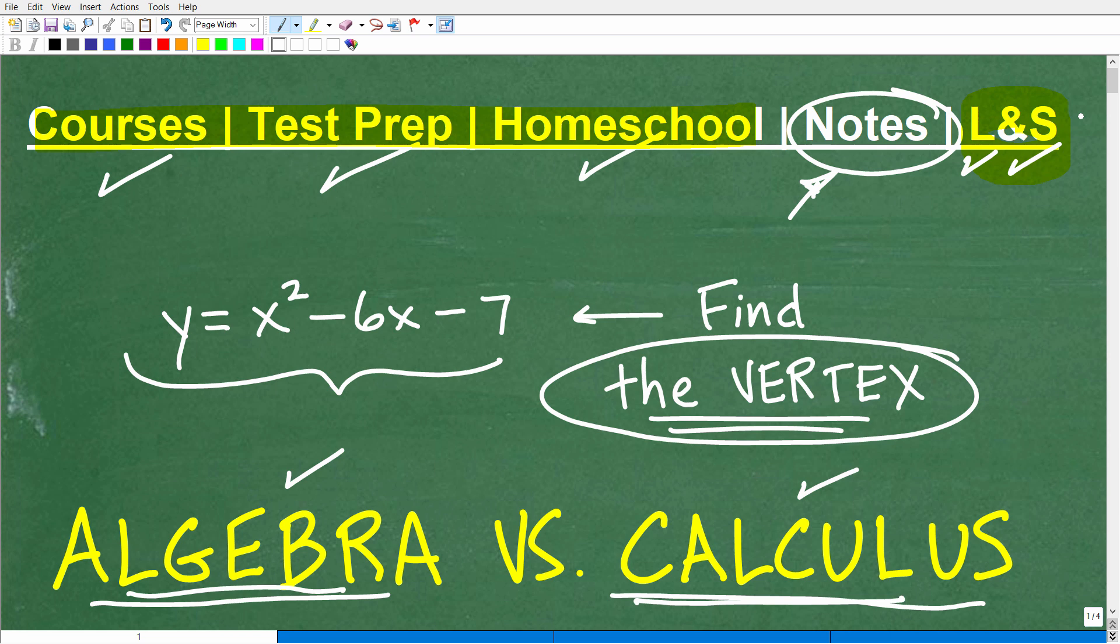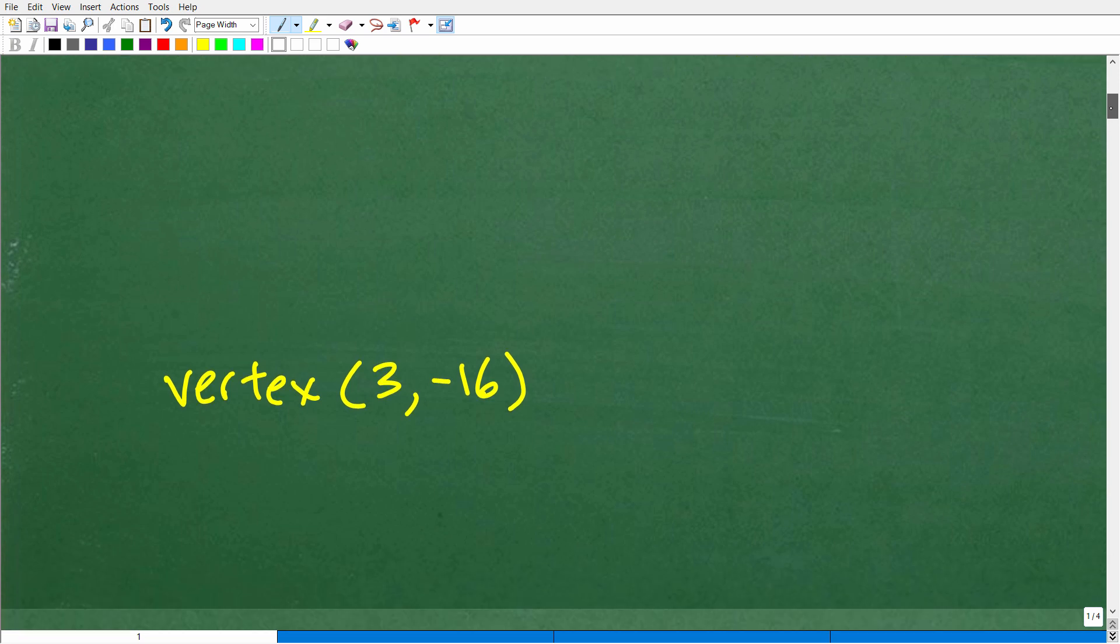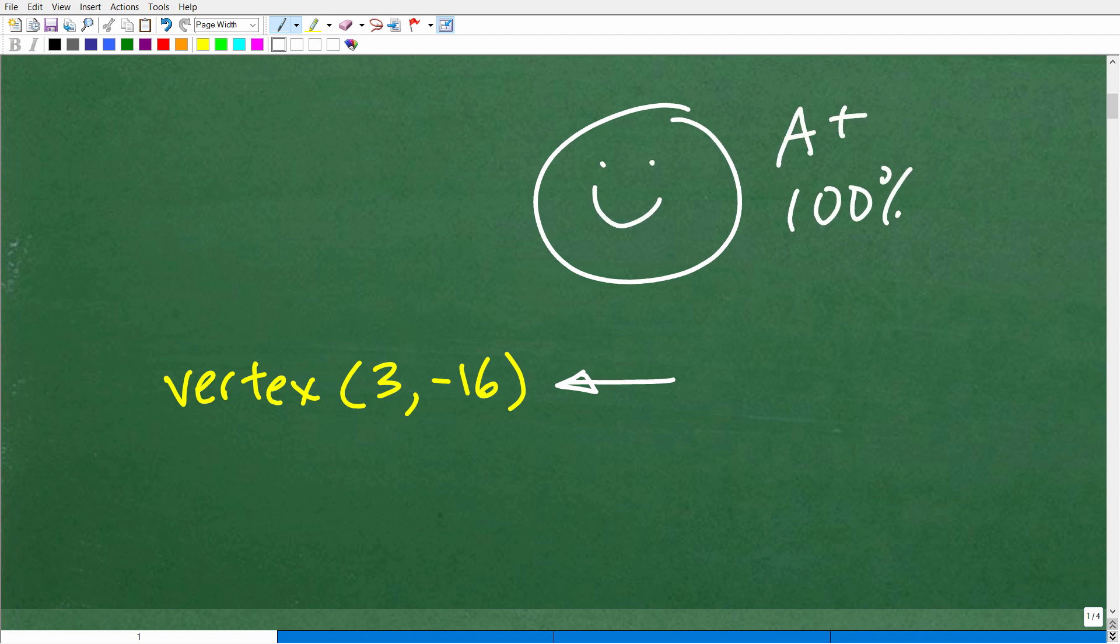Let's go ahead and find the vertex of this quadratic function or this parabola. Here is the answer. The vertex is located at the point 3, negative 16. If you got this right, that's very, very good. Matter of fact, you definitely earned a nice little happy face, an A plus, a 100%, and a few stars in my book. But here's the deal. If you're looking at this problem and you're like, I don't even know what the vertex means, well, let me go ahead and explain this right now.